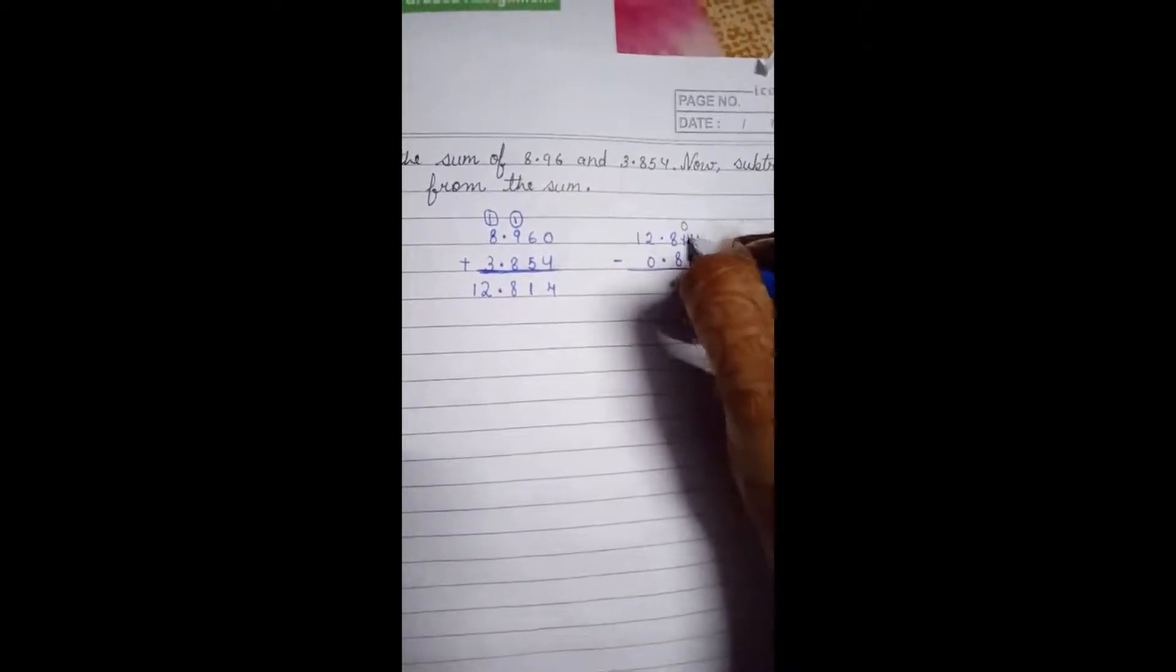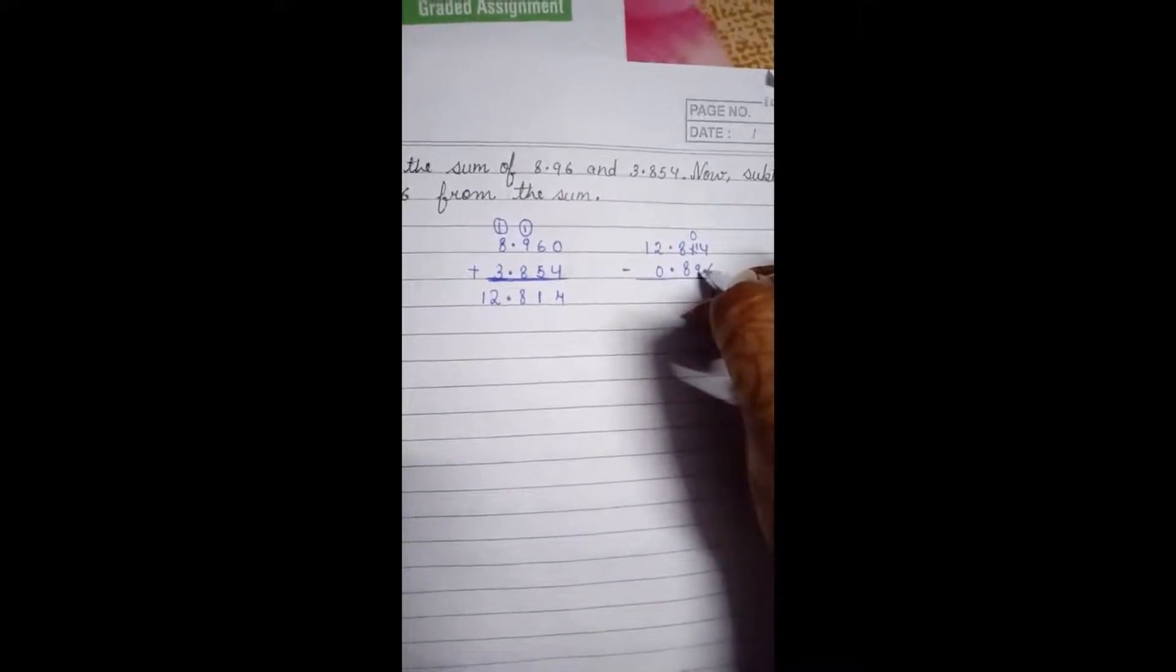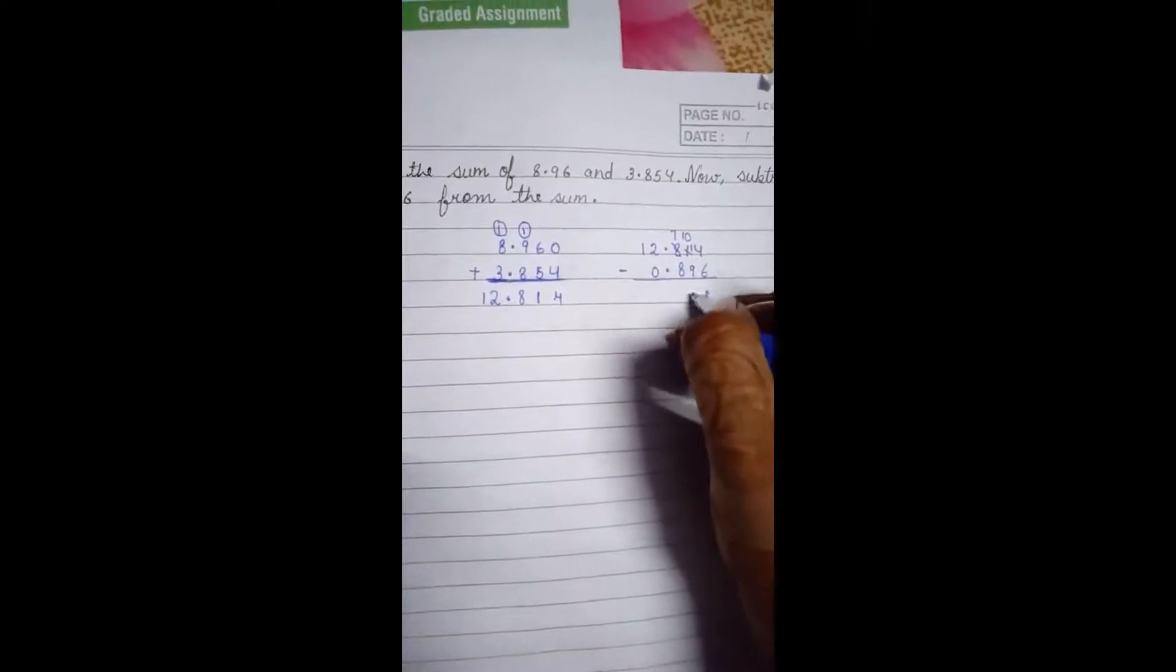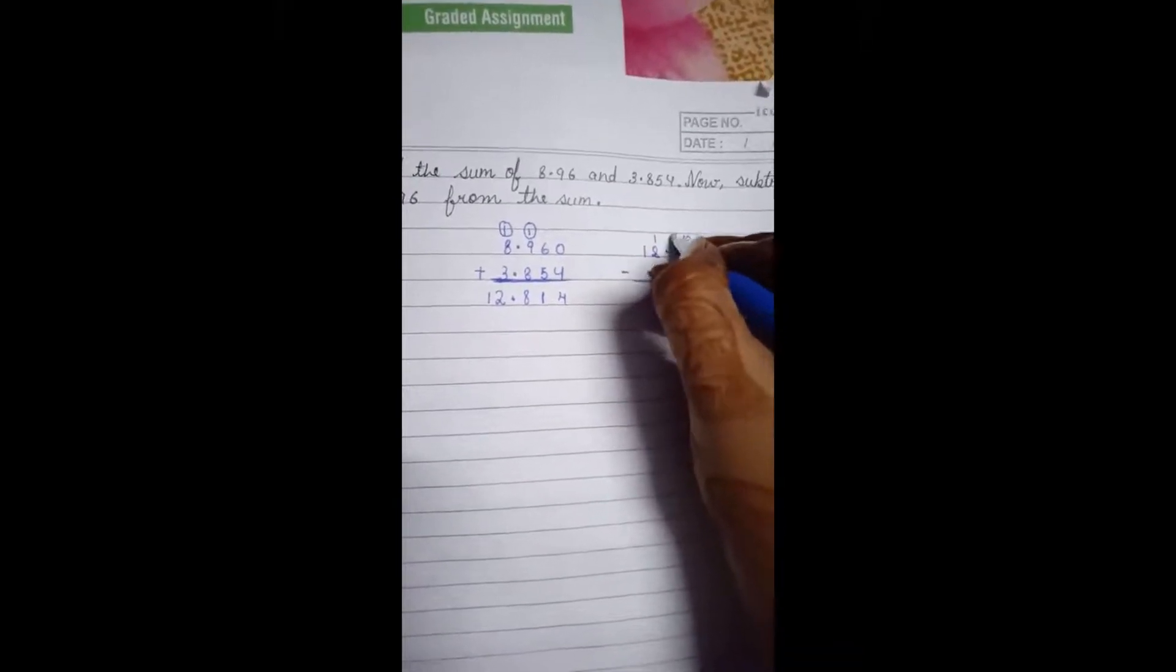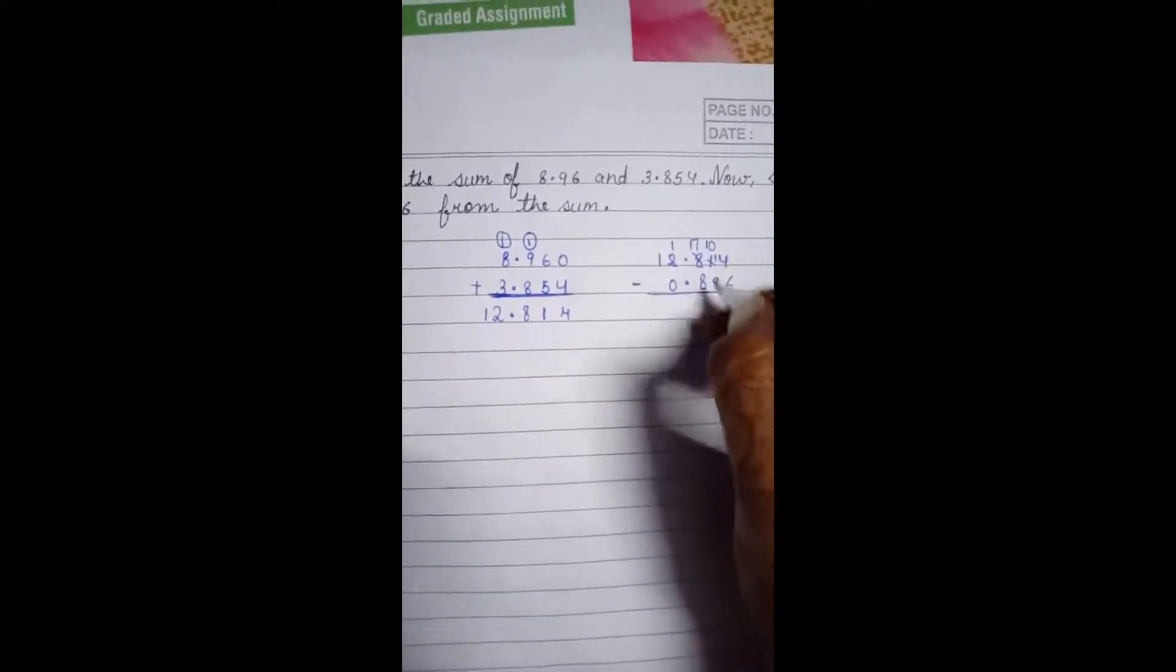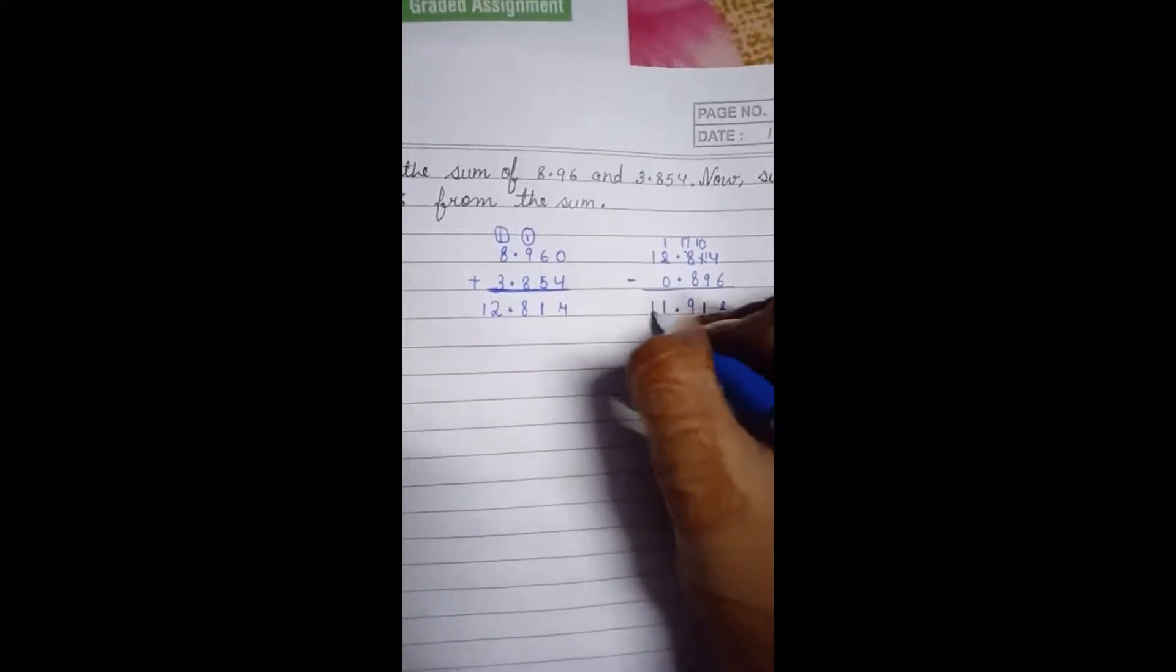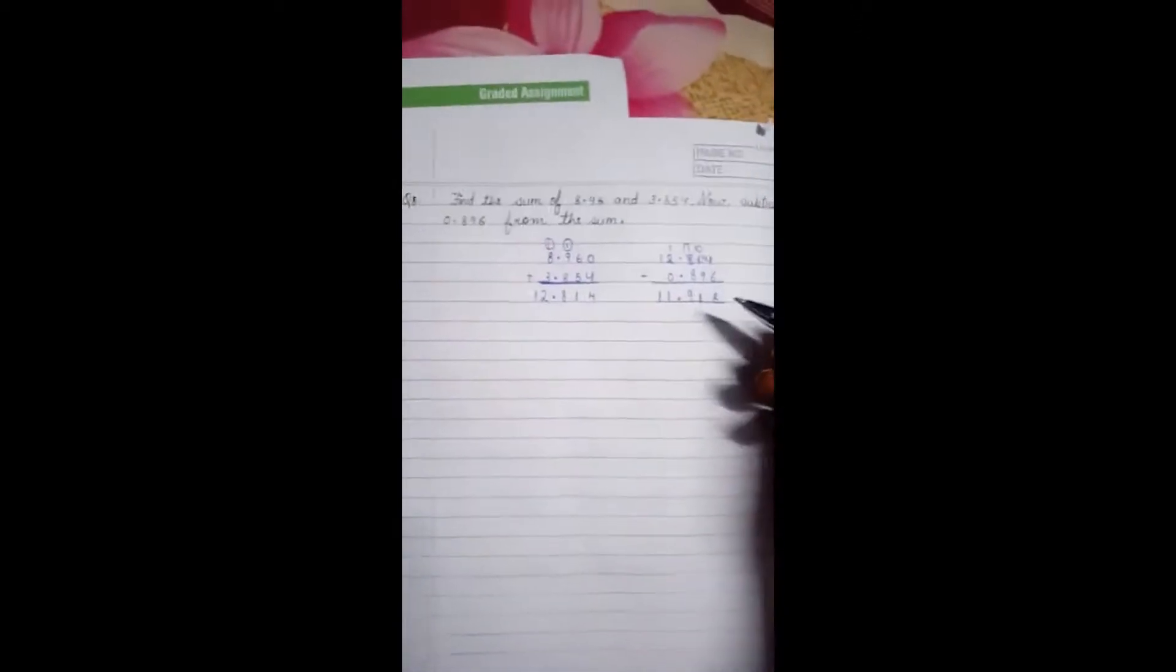6 cannot be subtracted from 4. We have to take borrow. Now it will become 14. 14 minus 6 is 8. Now 9 cannot be subtracted from 0. Again we will take borrow. 10 minus 9 is 1. Now again we will take borrow. 17 minus 8, we have to subtract 8 from 17, so it will be 9. Then decimal point, 1 minus 0 is 1, and 1 as it is. So this is the answer, this is the required number.